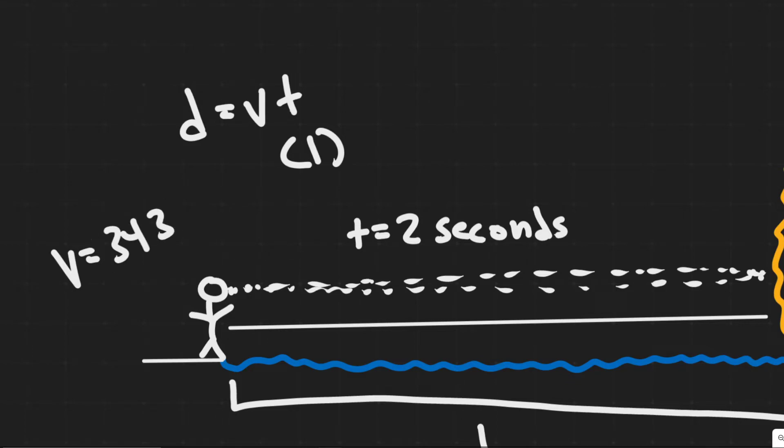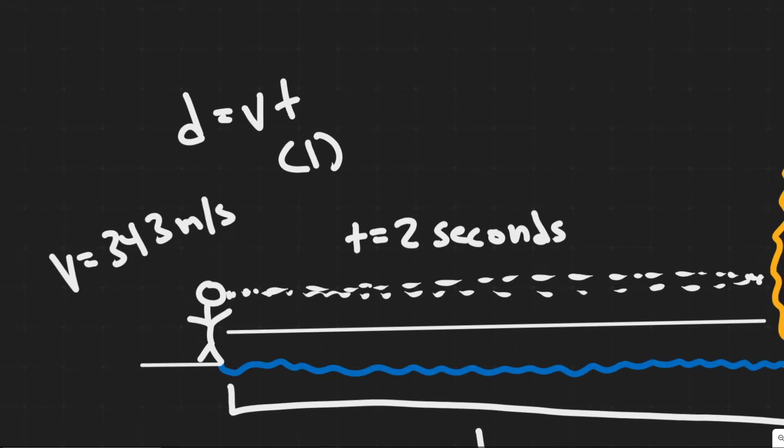Which is 343 meters per second. So the velocity of the speed of sound from her shout, 343 meters per second. We know it's going to travel for one second to cross this entire thing. So 343 times one. Notice the units are meters per second there. This is in seconds, so you just get meters. So it's basically just 343 meters.